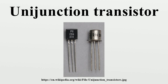There are three types of unijunction transistors. The original unijunction transistor, or UJT, is a simple device that is essentially a bar of N-type semiconductor material into which P-type material has been diffused somewhere along its length. The 2N2646 model is the most commonly used version of the UJT.